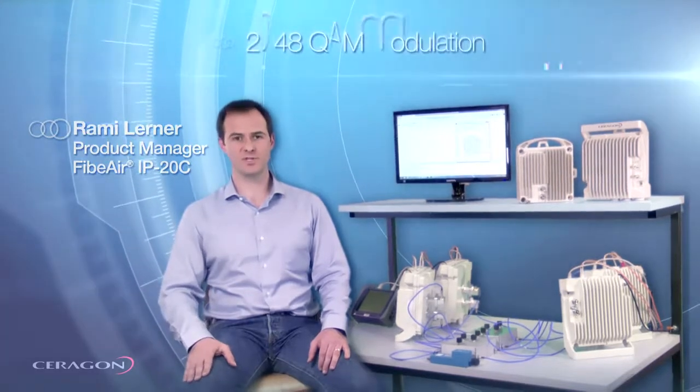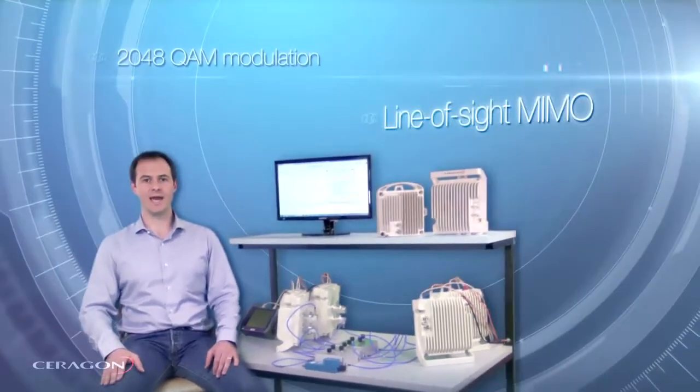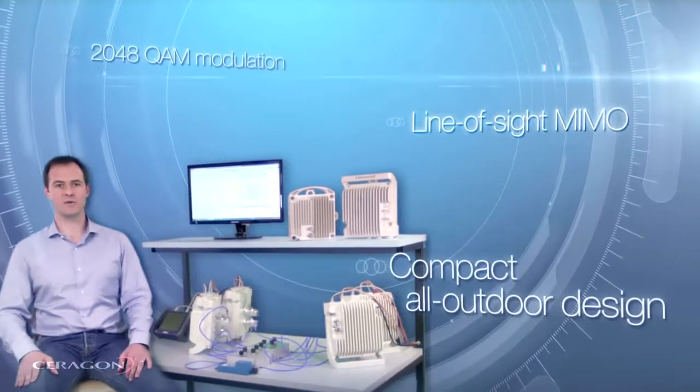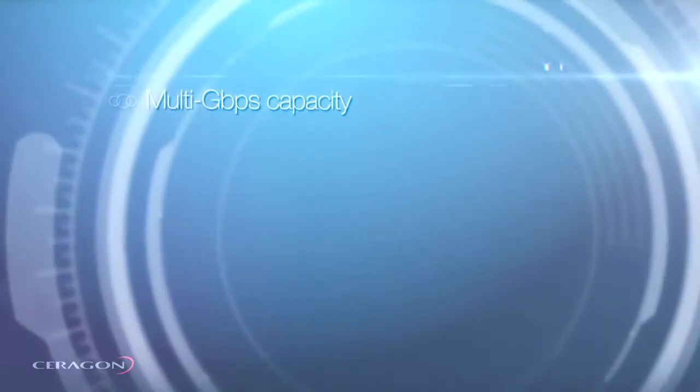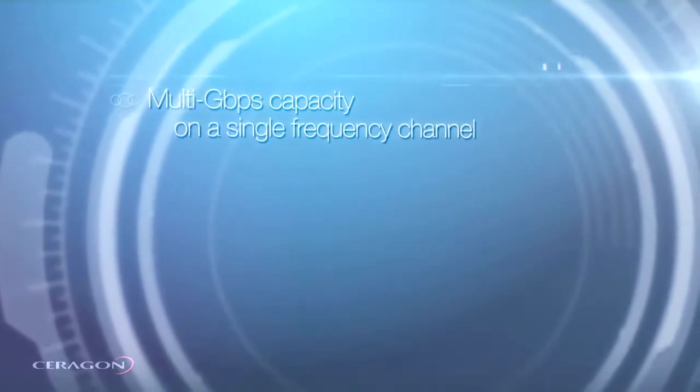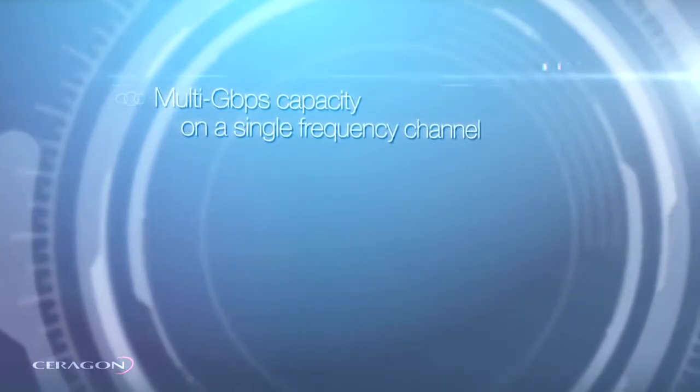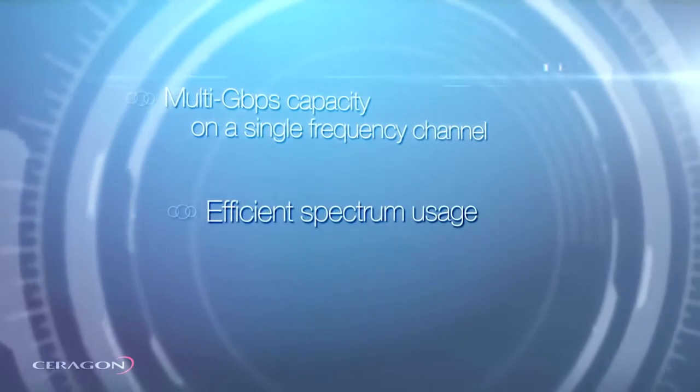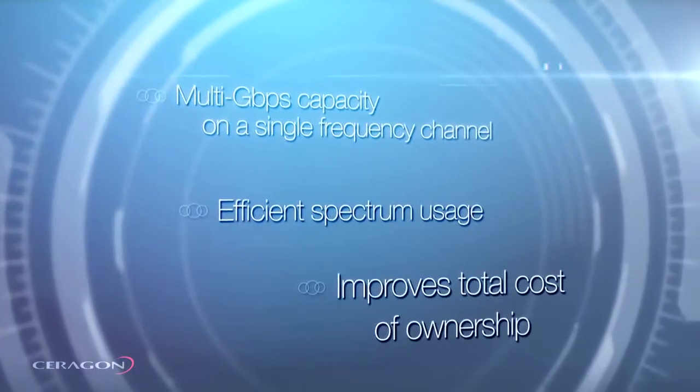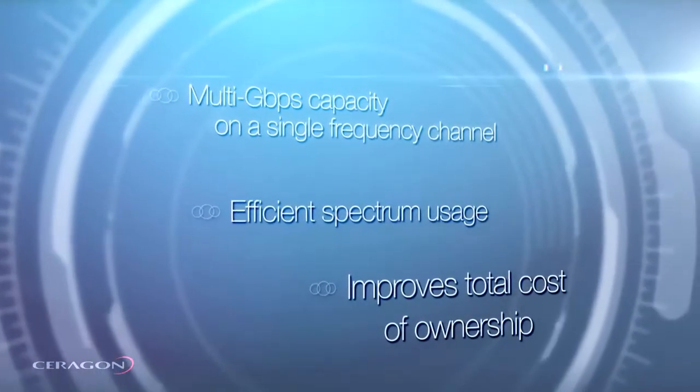The Fiber IP20C is a revolutionary multi-core radio that combines 2048 QAM modulation and line-of-sight MIMO in a compact all-outdoor design. It delivers multi-gigabit capacity on a single frequency channel and sets a new standard for efficient spectrum usage and significantly improves operators total cost of ownership.